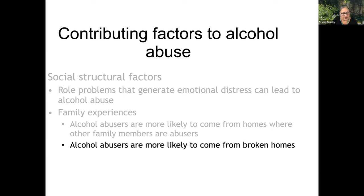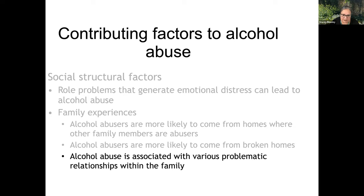Alcohol abusers are more likely to come from homes where other family members are abusers, and there's a genetic component to this. Whether it's your immediate family — mother, father — or secondary family like grandparents, aunts, and uncles, if alcoholism is present in your family, the likelihood of someone else having a problem with alcohol or drugs is greater. Alcohol abusers are also more likely to come from broken homes, and alcohol abuse is associated with various problematic family relationships.